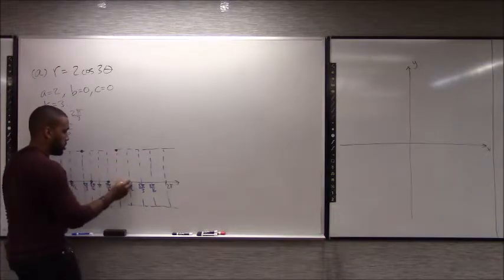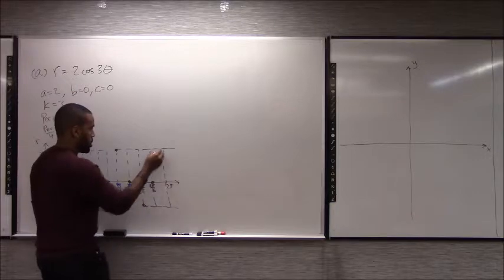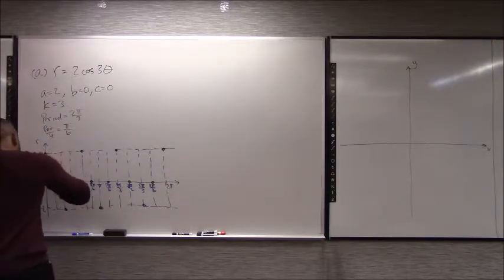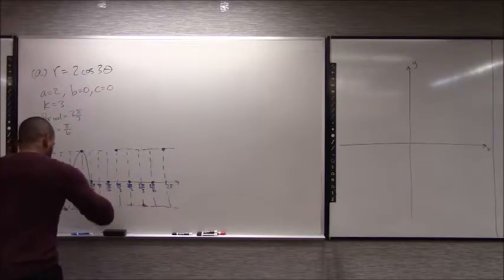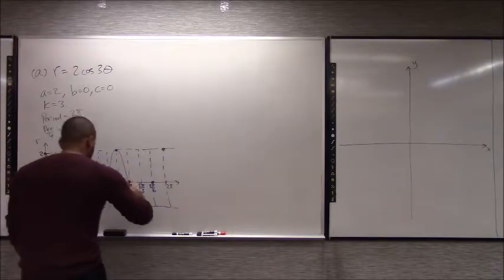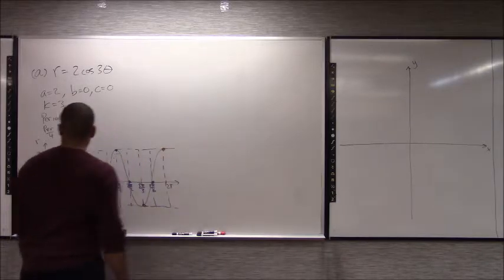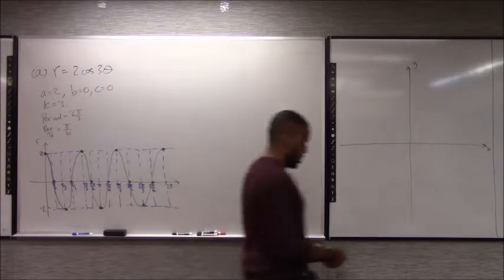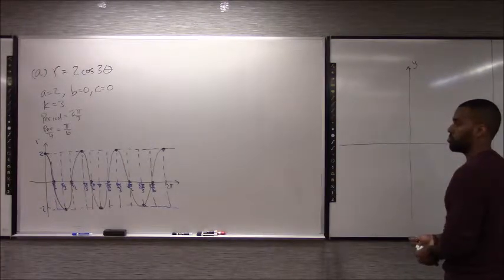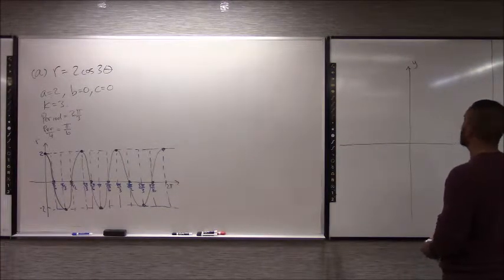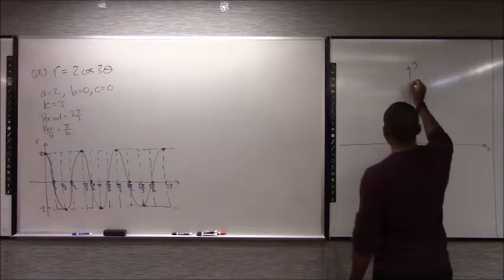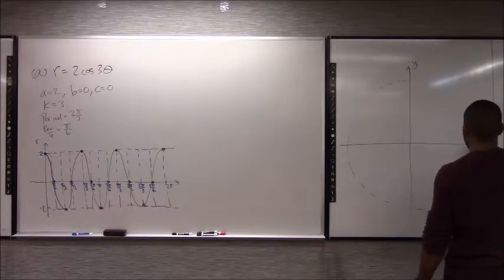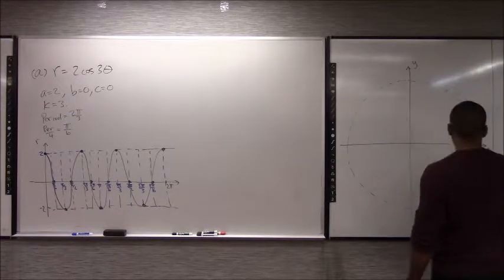Those are the points it's hitting — that's what the graph looks like. So how do we move that over to the polar plot? Start by sketching a circle with a radius of 2, because that's the largest radius.